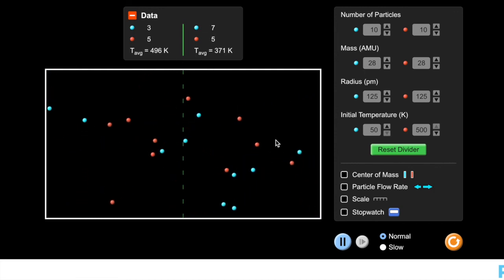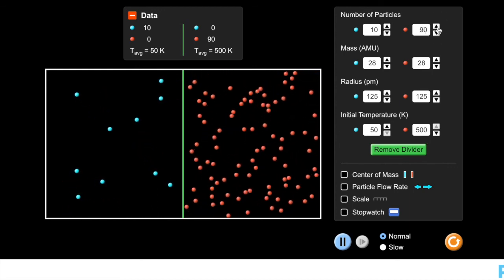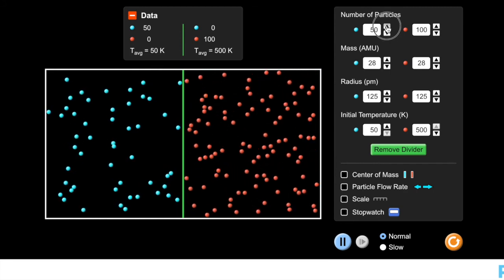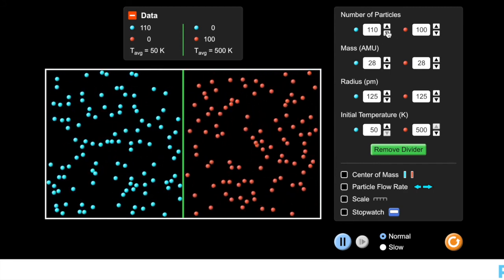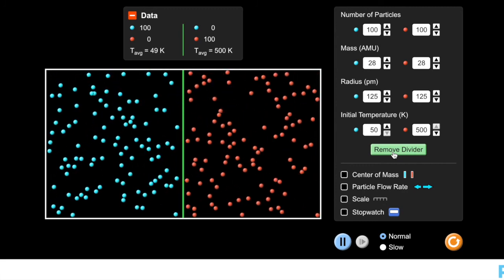But just to see what that looks like, let's reset our divider. I've still got my particles on this side and particles on this side. The temperature is still the same. But let's add a lot more. Let's look at 100. Let's go to 100 for each. And then when we remove the divider, let's see how much faster this happens.